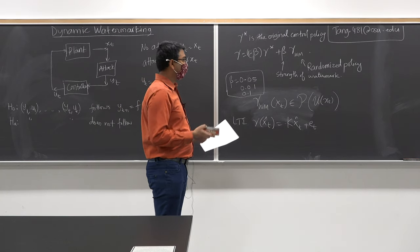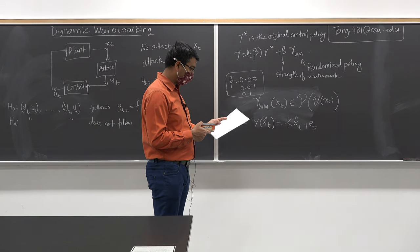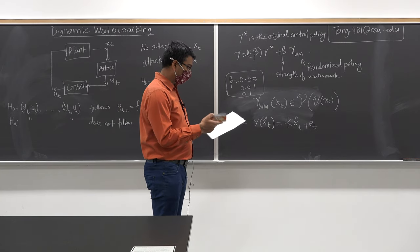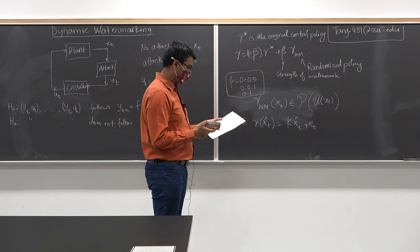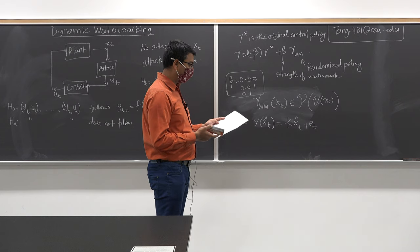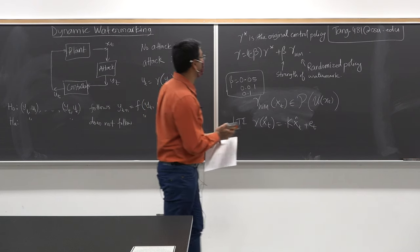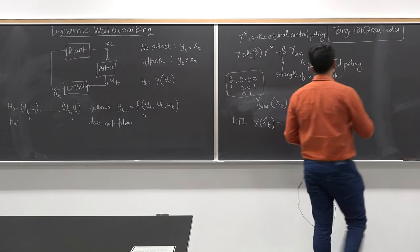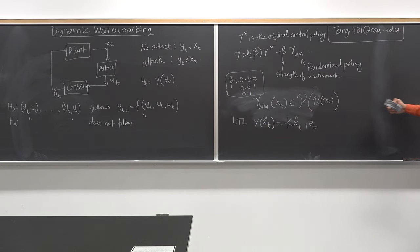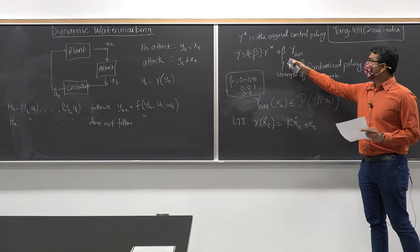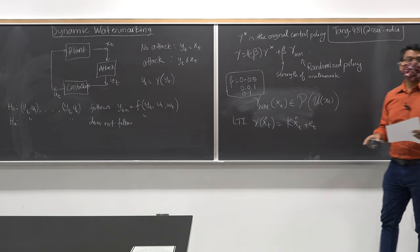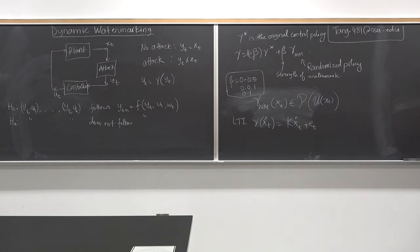I'm going to talk about the test statistics now. The algorithm for testing the hypothesis is in the handout — this printout contains the test statistics and results on mean delay and mean time between false alarms that we proved. Are there any questions? Is everyone clear on how to implement a randomized policy in a control system?